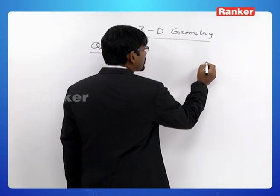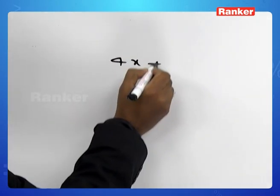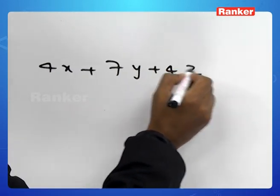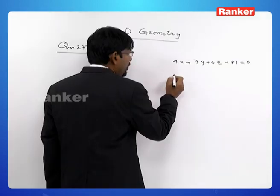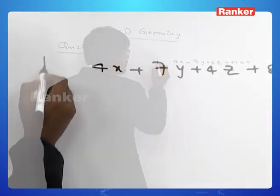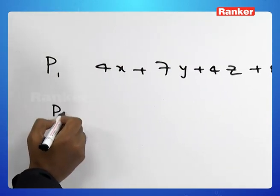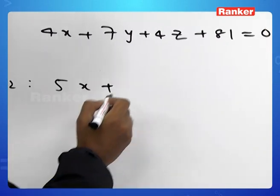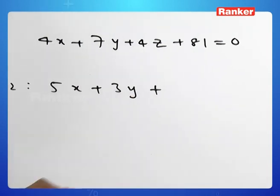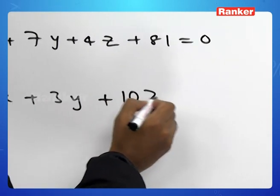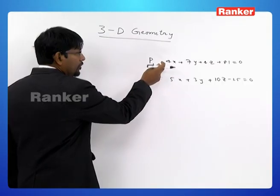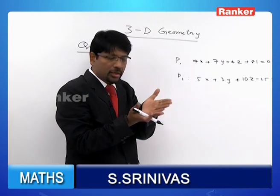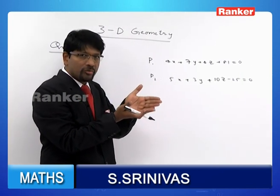We are given plane P1: 4x + 7y + 4z + 81 = 0, and another plane P2: 5x + 3y + 10z - 25 = 0. We observe that these two planes are non-parallel. Therefore, they intersect in a line. Two non-parallel planes will always intersect in a line.